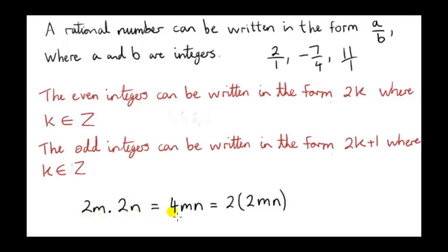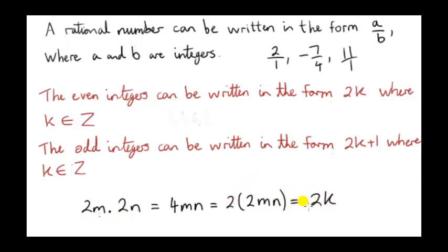m doesn't necessarily have to equal n. But if we multiply them, we get an integer of the form 4 times mn, which can be written as 2 times 2mn. So if we multiply two even integers, we get an even integer. This number has the form 2 times k, where k in this case is 2mn.